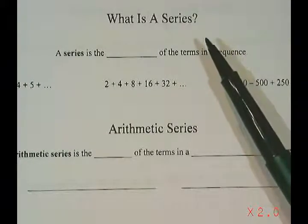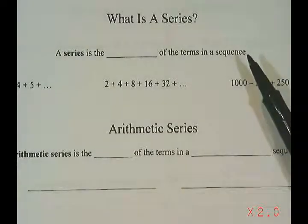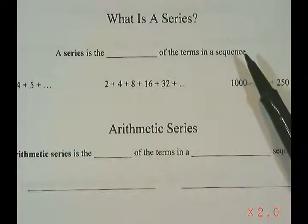A sequence is a list of terms, like one, two, three, four, five, all separated by commas. Now a series is what you get when you take all of the terms in your sequence and you add them together.